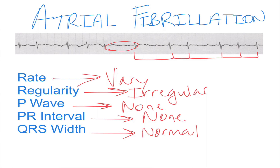So if you have no P wave, you see a squiggly line, and the rhythm is varying quite heavily, there's a very good chance that you're looking at atrial fibrillation.